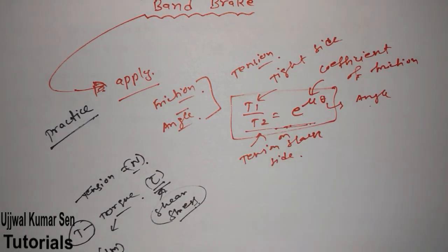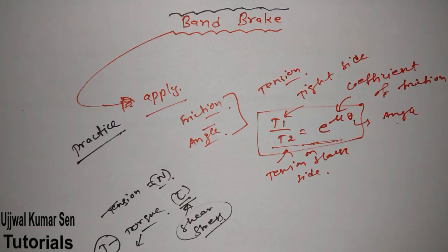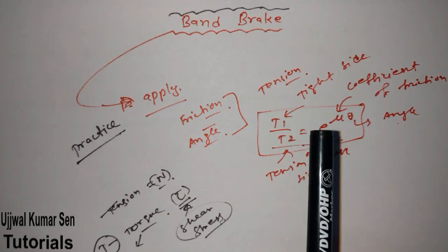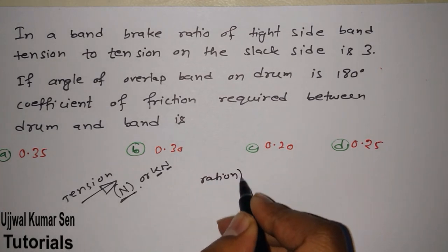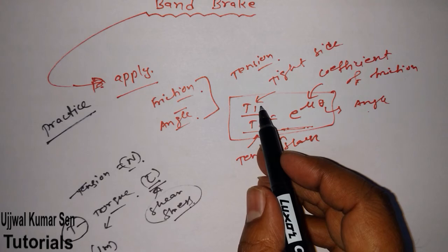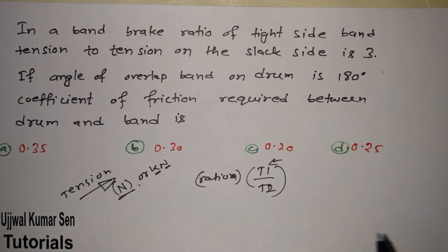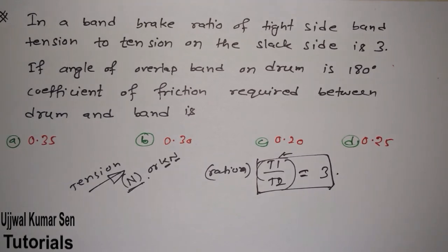Always try to understand these things, because they can cause confusion in the examination. To be clear: in this question, T is tension and its unit is Newton. The question gives us the ratio of tight side to slack side, meaning T1 by T2 is equal to 3. We have been given T1/T2 = 3.